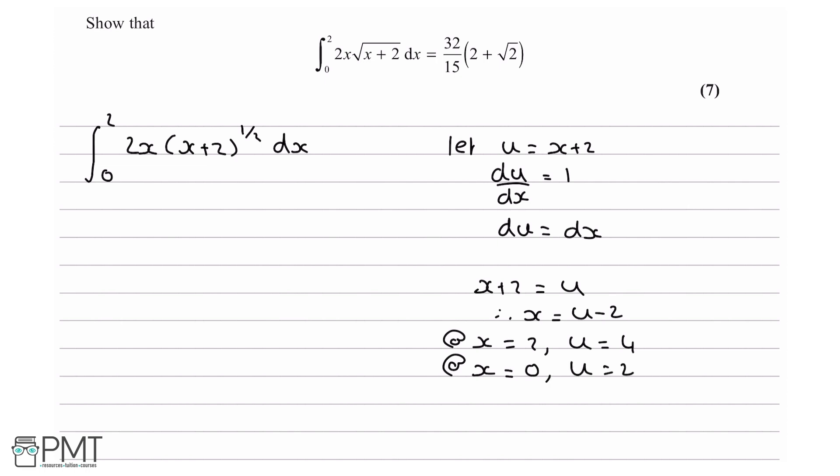So what I'm going to do now is plug in all of what we've done. So I'm going to say the integral, the bottom limit is 2 and the top limit is 4. 2x is 2 times (u minus 2), so it's going to be (2u minus 4) times (x plus 2) to the half. Well, x plus 2 is u, so it's going to be u to the half, and then it's going to be du.